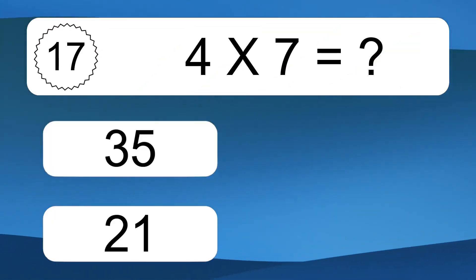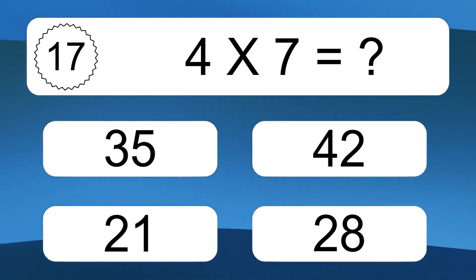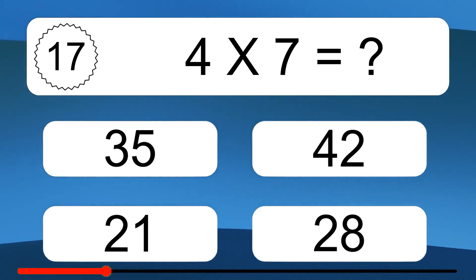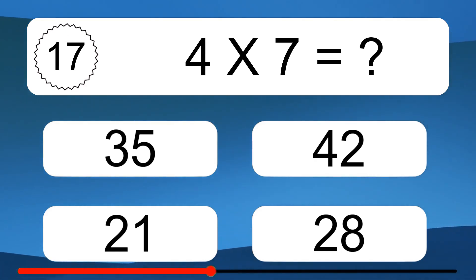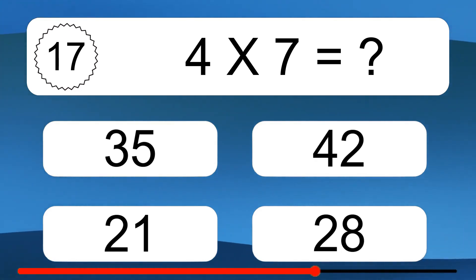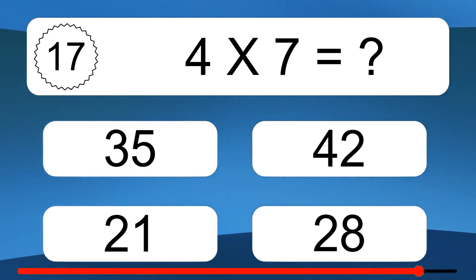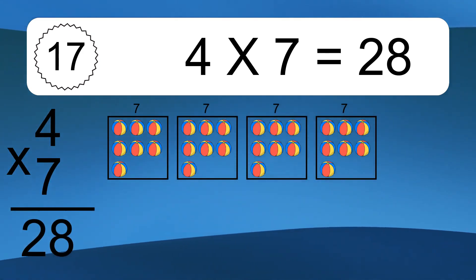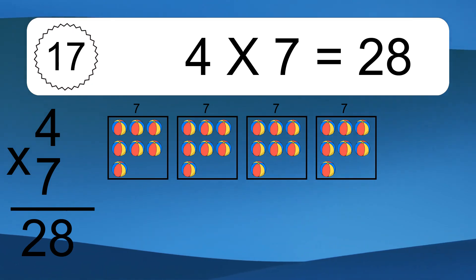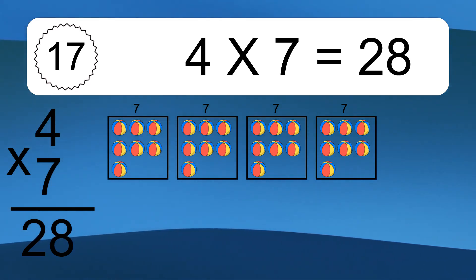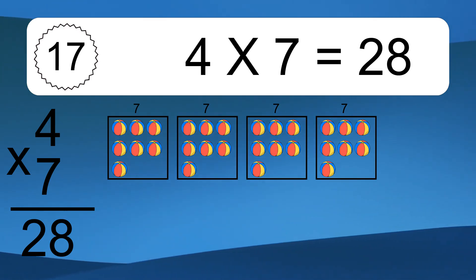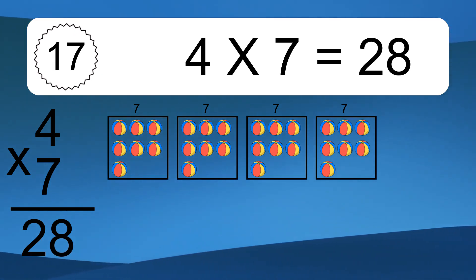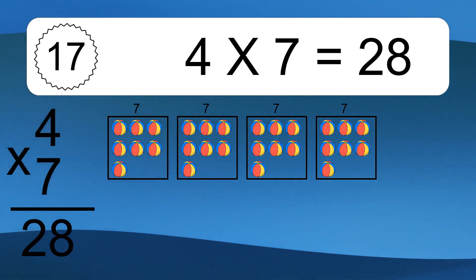4 times 7 equals what? 4 times 7 equals 28. We have 4 boxes and each box has 7 colorful balls inside. If you count all the balls in all the boxes together, you will have 4 times 7 balls. This equals 28 balls.